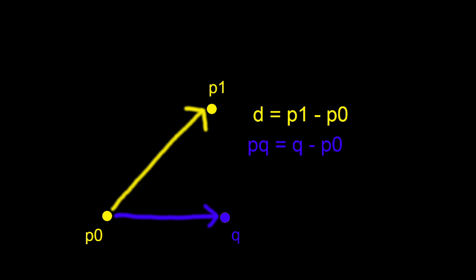So how do we do this? Well, first we can create these two vectors for our projection by subtracting P1 minus P0 and Q minus P0. We will call these variables D and PQ, respectively.